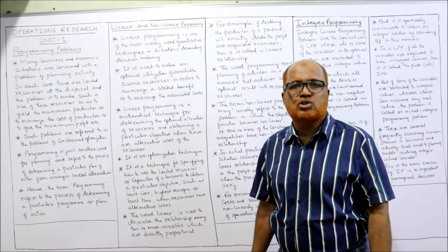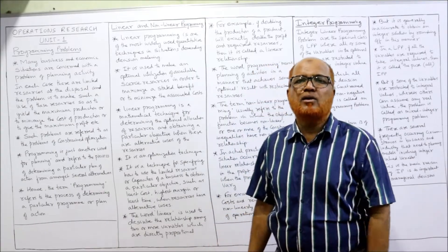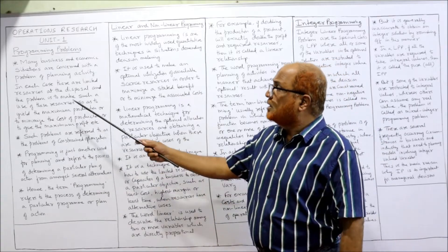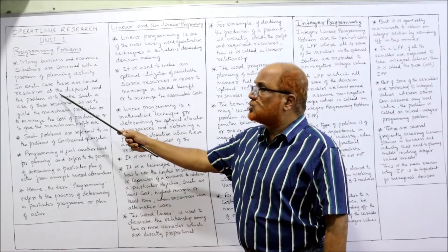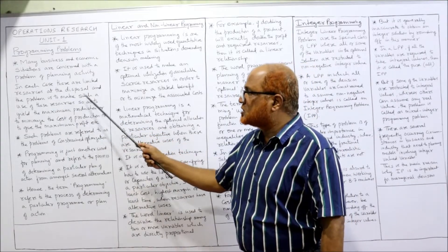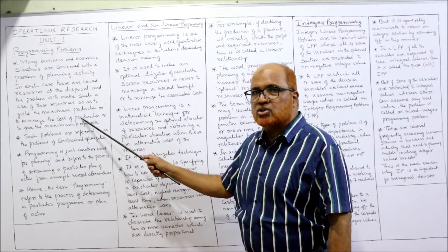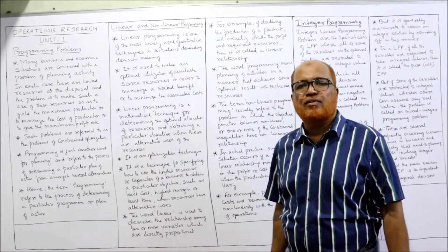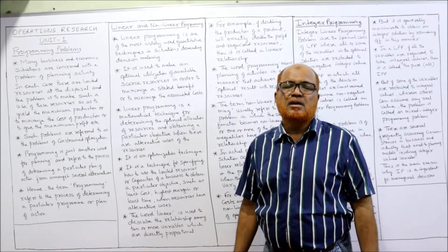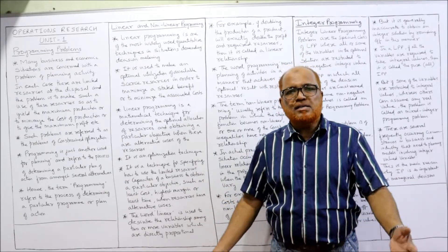The management has to decide how to allocate scarce resources in order to attain a given objective. In each case there are limited resources at disposal, and the problem is to make such use of those resources as to yield maximum production, minimize the cost of production, or give maximum profit.